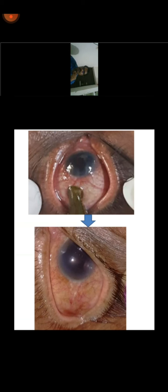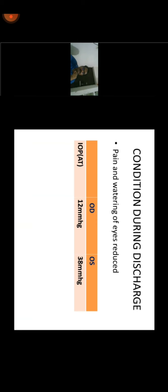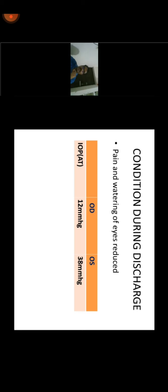Comparing before and after, you can see the severe circumciliary congestion is reduced and there is no mark of the leaching — completely healed. The patient was completely relieved of pain, watering, and itching — that was our aim. On repeat tonometry, right eye IOP was 12 mmHg and left eye 38 mmHg — reduced from 54 to 38 with a single sitting of leaching. This shows that scleral leaching can be practiced when the patient has this type of presentation and is aware of their vision status.